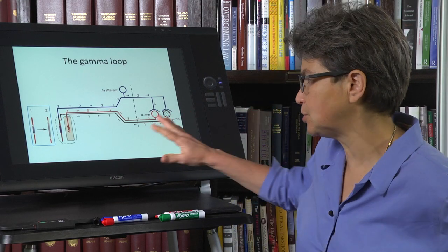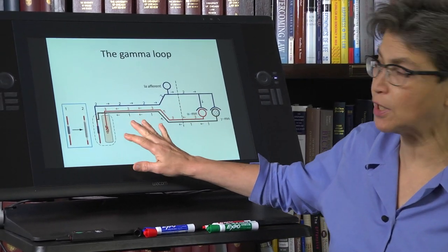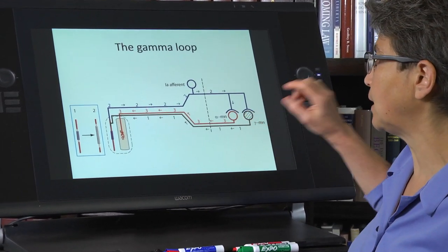So this diagram is going to reiterate what I put on the board, but it's a slightly nicer diagram, and it shows you that gamma loop.